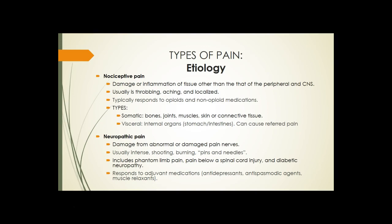Etiology — where is the pain coming from? It can be nociceptive, stemming from damage or inflammation of a tissue. This is usually described as throbbing, aching, or localized. Localized nociceptive pain typically responds well to both opiate and non-opiate medications.